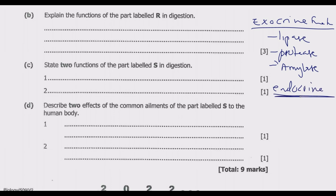Under the endocrine function, the pancreas releases two hormones that are critical in regulating the glucose level in our body, also known as the blood sugar level. The two hormones are insulin, which is secreted to lower blood glucose when the levels get too high, and glucagon, which is secreted to increase blood glucose when the levels get too low.